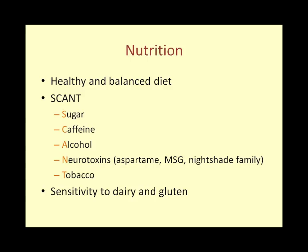Certain food groups and habits are not well tolerated by CFS or FM patients. These are represented by the acronym SCANT: Sugar, Caffeine, Alcohol, Neurotoxins, and Tobacco. Most patients with CFS crave sugar and note it can provide a burst of energy, but sugar leads to hypoglycemic crashes and craving cycles. Caffeine is also used as an energy boost but leads to a crash. Alcohol is not well tolerated physically by most patients, and tobacco is simply unhealthy.